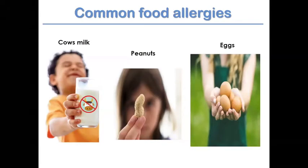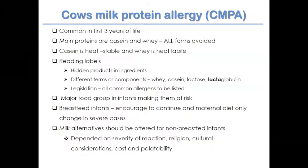The common foods being discussed are cow's milk, peanuts, and egg. Cow's milk allergy is common in the first three years of life. The main proteins are casein and whey, and all forms of dairy must be avoided — unlike with lactose intolerance. Casein is heat stable and whey is heat labile, which matters when considering baked products. Reading labels is essential — look for whey, casein, lactose, lactoglobulin, and anything with 'lacta' attached, which suggests a dairy protein.